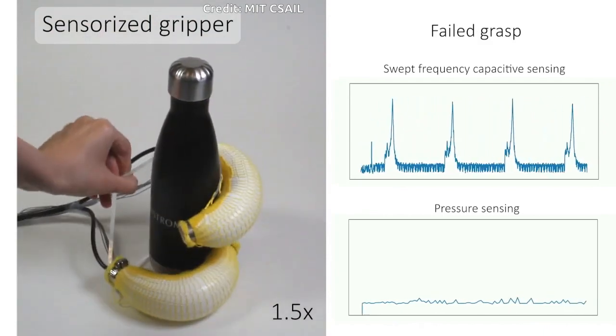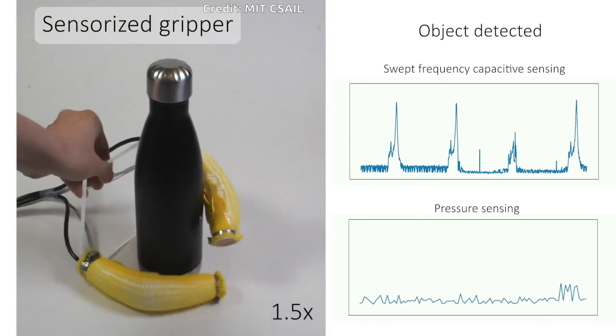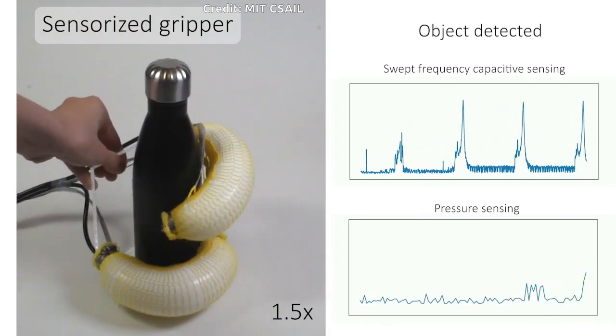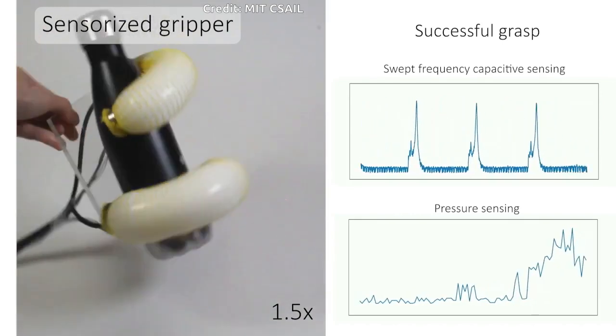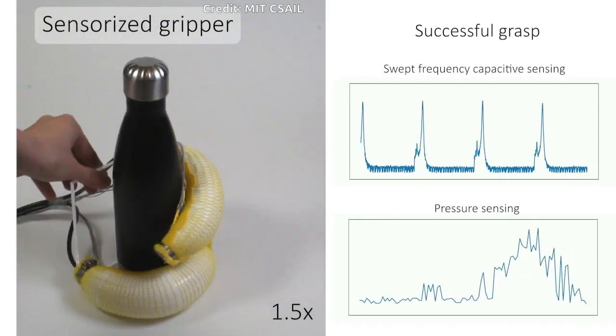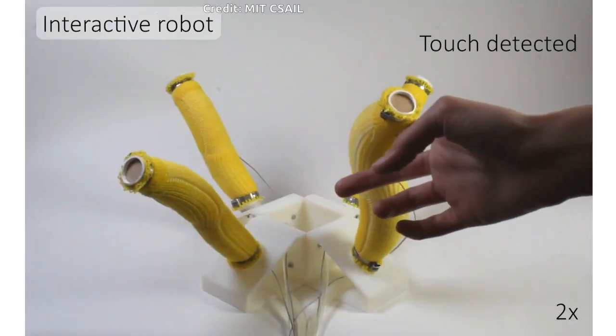One type of sensing the team incorporated was called resistive pressure sensing, where the actuators sense pressure. When fabricating a robotic gripper, it would try to grab onto something, and the pressure sensor would sense how much force was being applied to the object, and then it would try to see whether the grasp was successful or not.